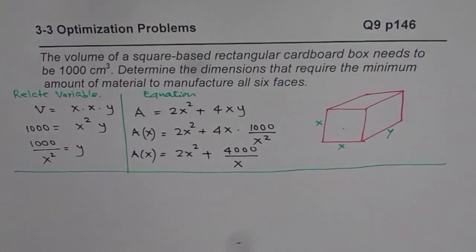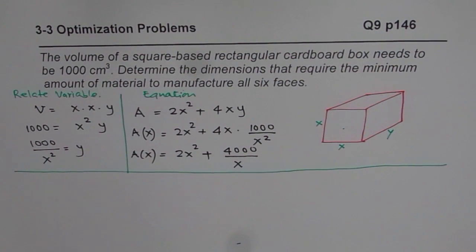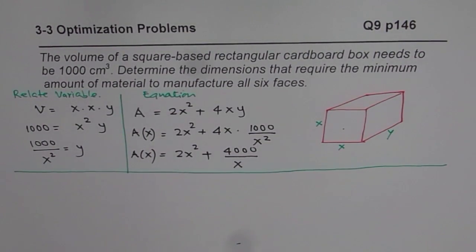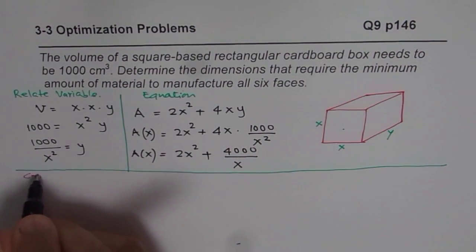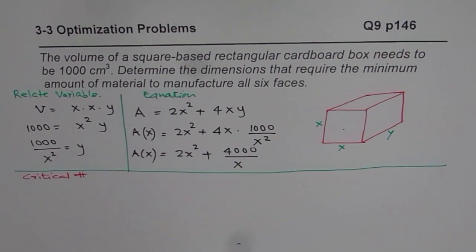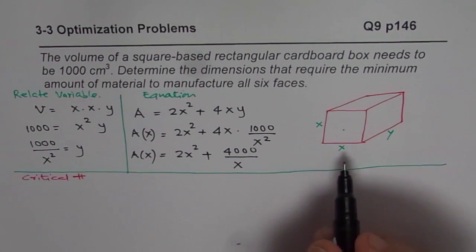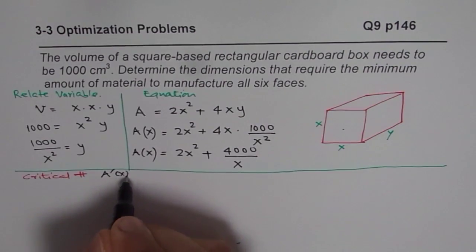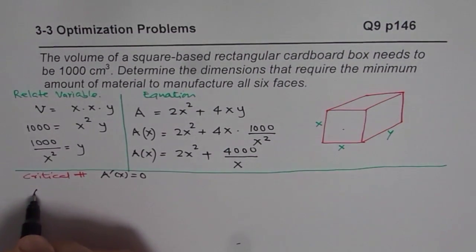Now we will consider the maximizing or minimizing. In that case, what we have is we will find the critical points. So now we will find the critical number. In this particular scenario, the critical number is the derivative equal to 0. So we are saying derivative equals to 0.